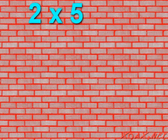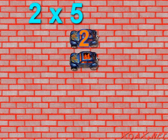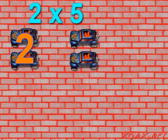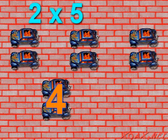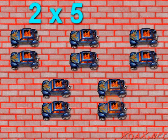Let's look at 2 times 5. If we take 2 cars, 1, 2, and multiply that 5 times, 1, 2, 3, 4, 5.